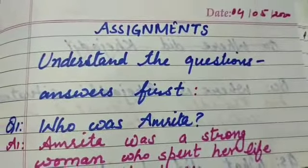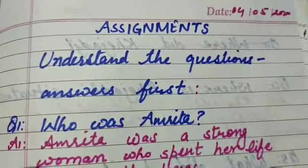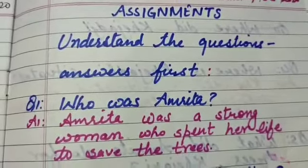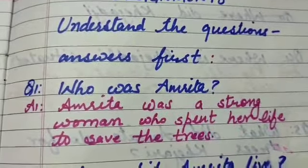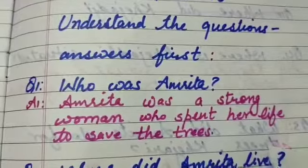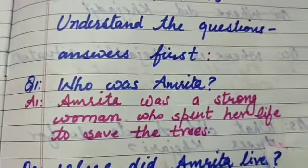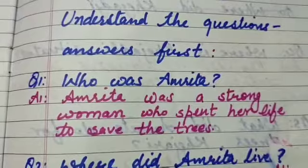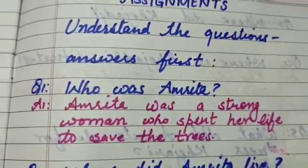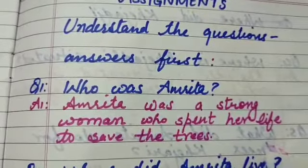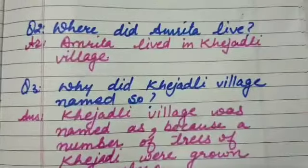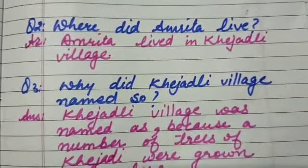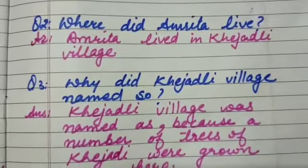Let us understand the question answers first so you may write them with understanding and also learn them with understanding. The first question is: who was Amrita? Amrita was a strong woman who spent her life to save the trees. Now the second question is: where did Amrita live? Answer is Amrita lived in Khajarli village.